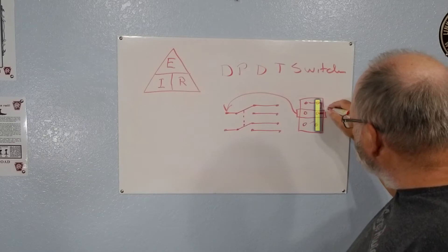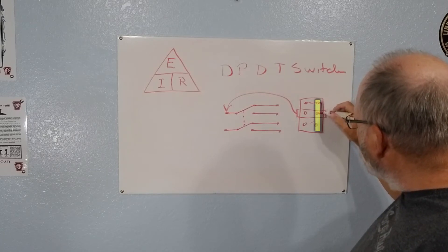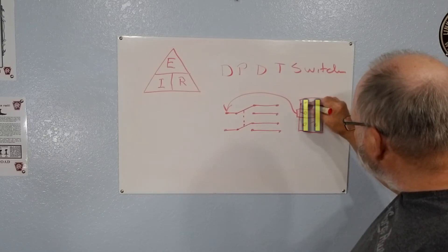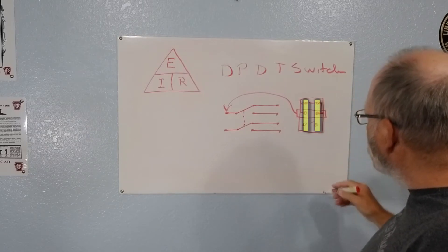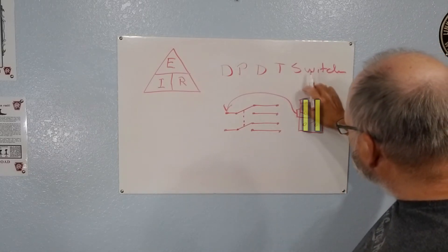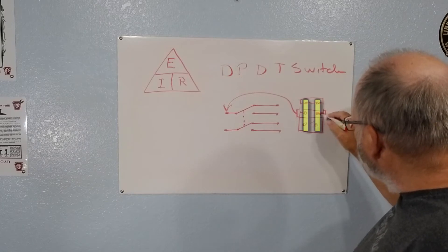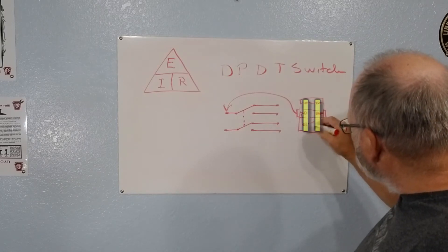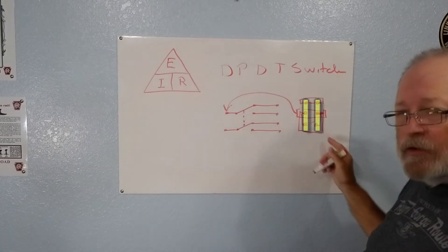This is like the wiper right here and it either goes this way and when this one goes this way this one goes this way, they're both connected. And so when you flip the switch the other way these two are connected. So that's a double pole double throw switch.